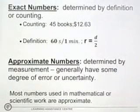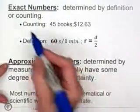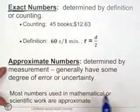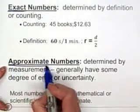When we're working with mathematics and science, we are usually dealing with two different kinds of numbers. One of them is exact numbers, and the other one is approximate numbers.